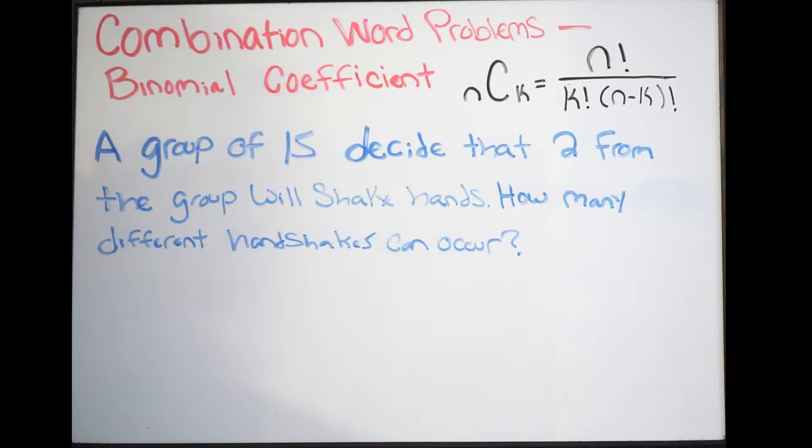This will be example three of our combination word problems. We're trying to find the binomial coefficient to solve the combination problem. It says a group of 15 decide that 2 from the group will shake hands. How many different handshakes can occur?